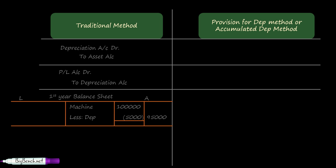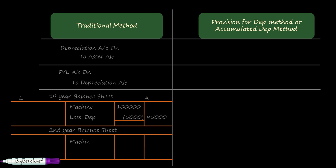In the next year's balance sheet, the machine will be shown at ₹95,000 less depreciation. If you are following the SLM method, the depreciation amount will again be ₹5,000, so the outer column shows ₹90,000. The WDV keeps decreasing every year because depreciation is charged directly to the asset account, reducing its value.